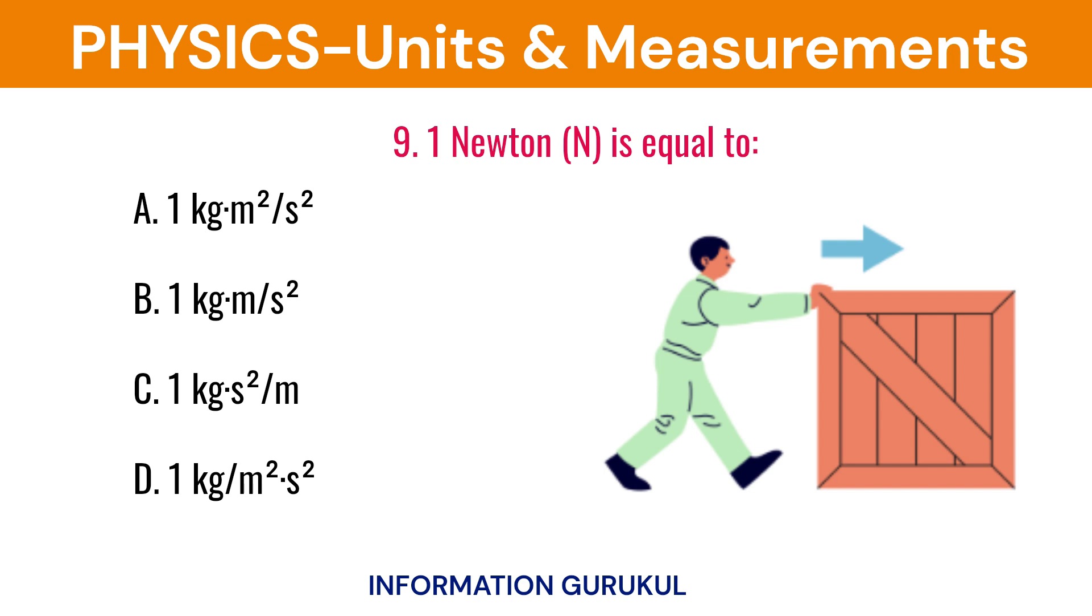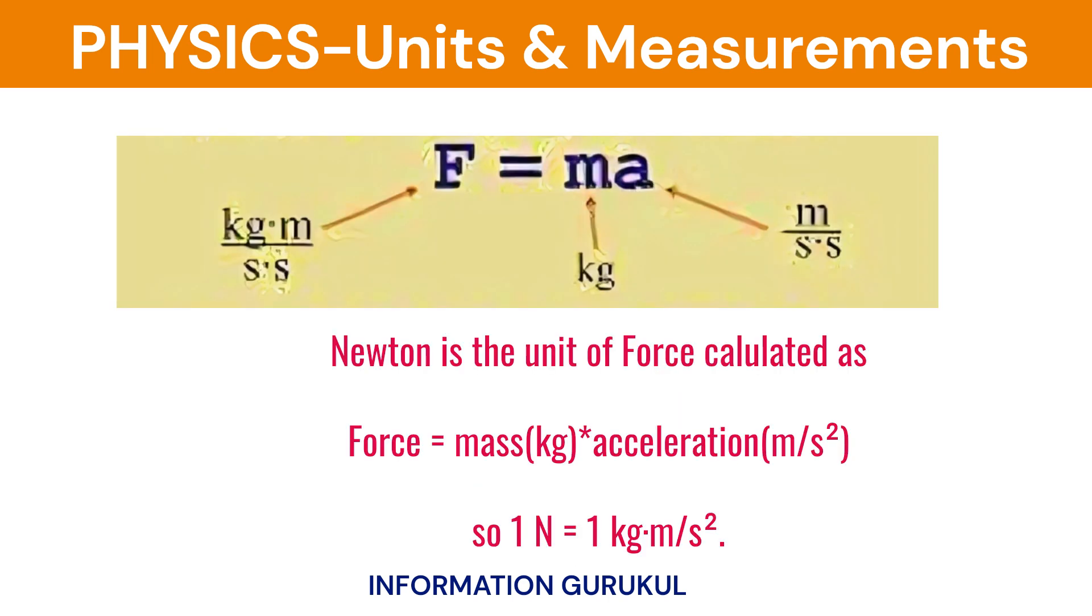One newton is equal to one kilogram meter per second squared. Newton is the unit of force calculated as force equals mass times acceleration. So one N equals one kg·m/s².